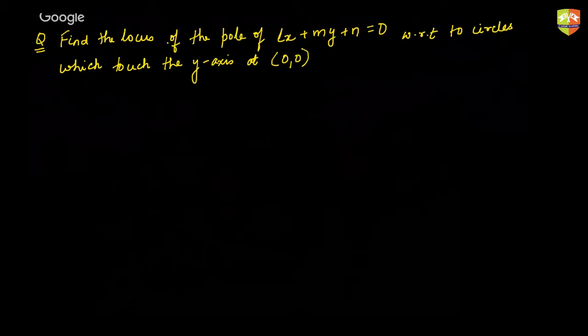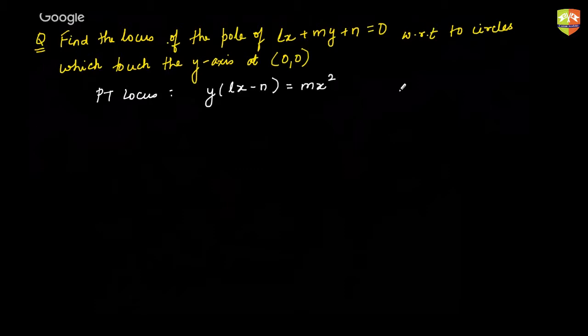Or should I give it as a 'prove that' question? Prove that the locus equation would be y(lx − n) = mx². If you're done, please type 'done' in the chat box so that I can start the discussion.